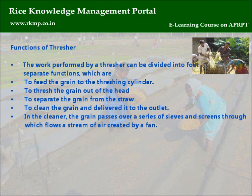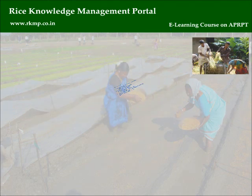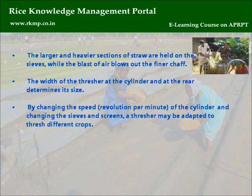Functions of the thresher can be divided into four: to feed the grain to the threshing cylinder; to thresh the grain out of the head; to separate the grain from the straw; and to clean the grain and deliver it to the outlet. In the cleaner, grain passes over a series of sieves and screens through which flows a stream of air created by a fan. Larger and heavier sections of straw are held on the sieves, while the blast of air blows out the finer chaff. By changing the speed (RPM) of the cylinder and changing the sieves and screens, a thresher may be adapted to thresh different crops.